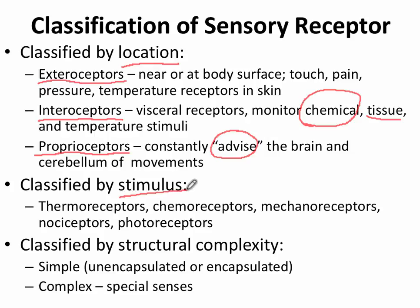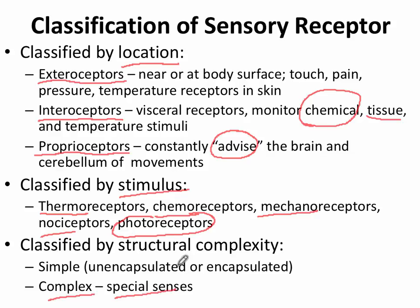The second classification is by stimulus. The prefix usually tells you the type: chemical, thermal for temperature, mechanical for pressure, and nociceptor for pain. Photoreceptors, the complex receptor type, won't be covered until Chapter 15. The simple receptors we've seen in this chapter are either unencapsulated or encapsulated — meaning enclosed by a connective tissue capsule, like the Pacinian corpuscle.